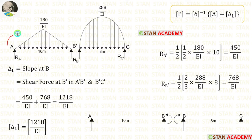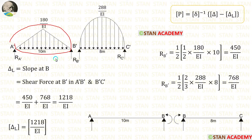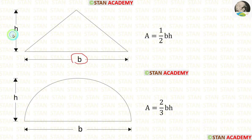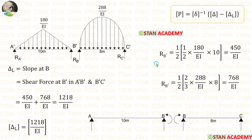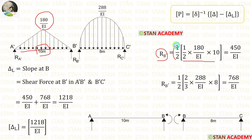First, let us calculate the reaction in span A'B'. This is a uniformly varying load acting in a simply supported beam and is a symmetrical diagram, so we divide the total load by 2 to get the reactions. To get the total load, we calculate the area. Consider a triangle of breadth B and height H; the area formula is half × breadth × height. Here the breadth is 10 and the height is 180/EI. To get the reaction, we divide the area by 2. After calculation, we are getting 450/EI.